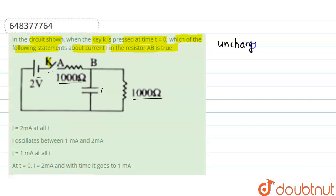So when the key is closed, current will start flowing in the circuit, and the capacitor is initially uncharged, so the current, which is the charge flowing through these wires, will be consumed by this capacitor and it will start charging itself.